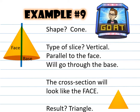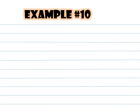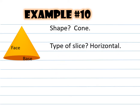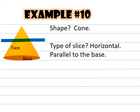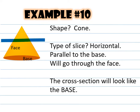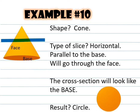Example number ten, our final example: again the shape is a cone with a face and the base. The type of slice is horizontal, going across parallel to the base, going through the face. The cross section will look like the base. The result is a circle.